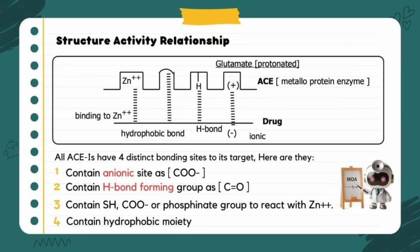Now let's talk about the structure-activity relationship of ACE inhibitors. ACE inhibitors are most commonly administered as oral agents, but intravenous forms are available. All ACE inhibitors have four distinct binding sites for their target: number one is the anionic site, followed by a hydrogen bond forming group, and a hydrophobic moiety.